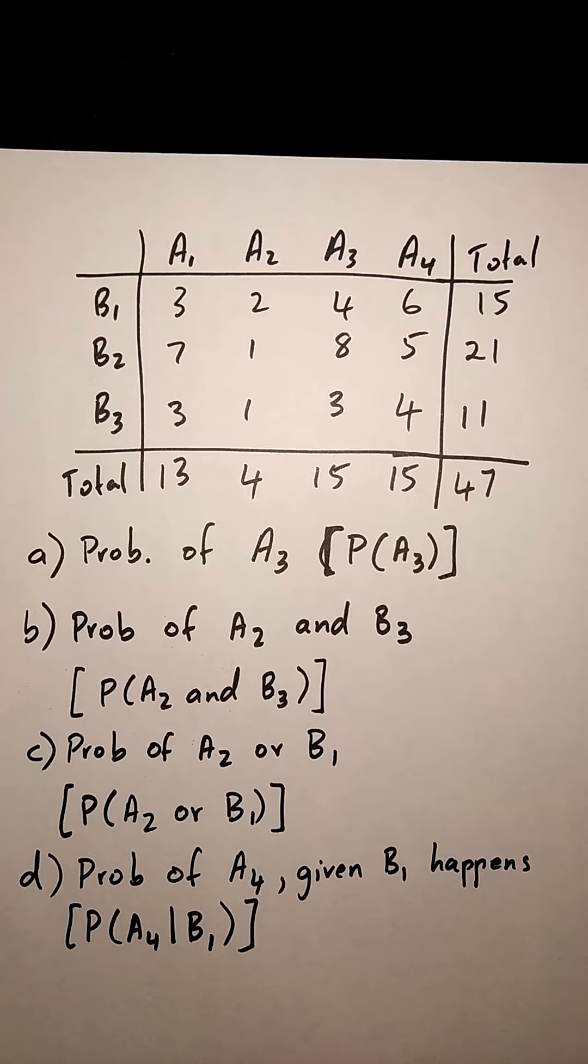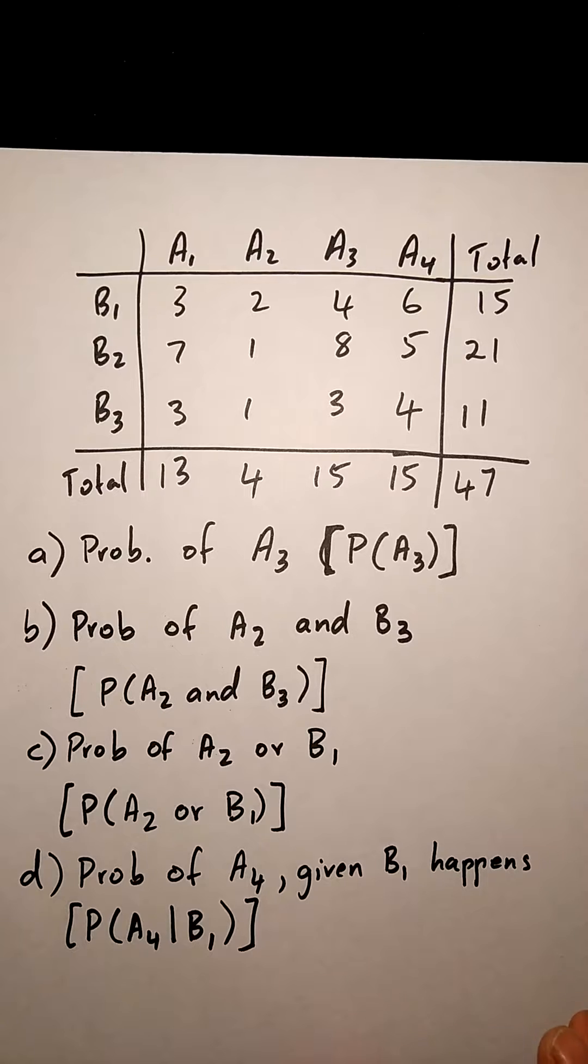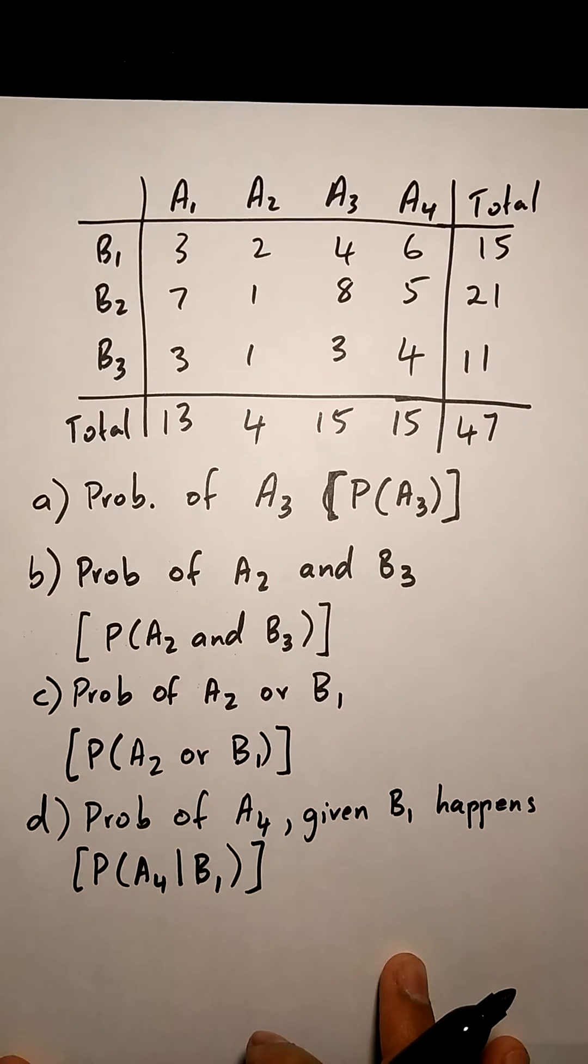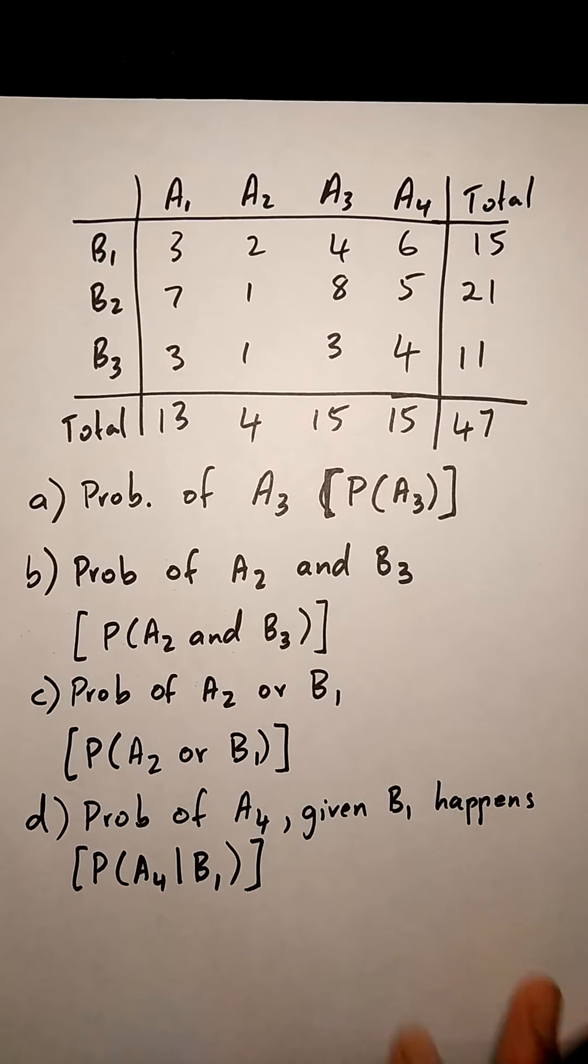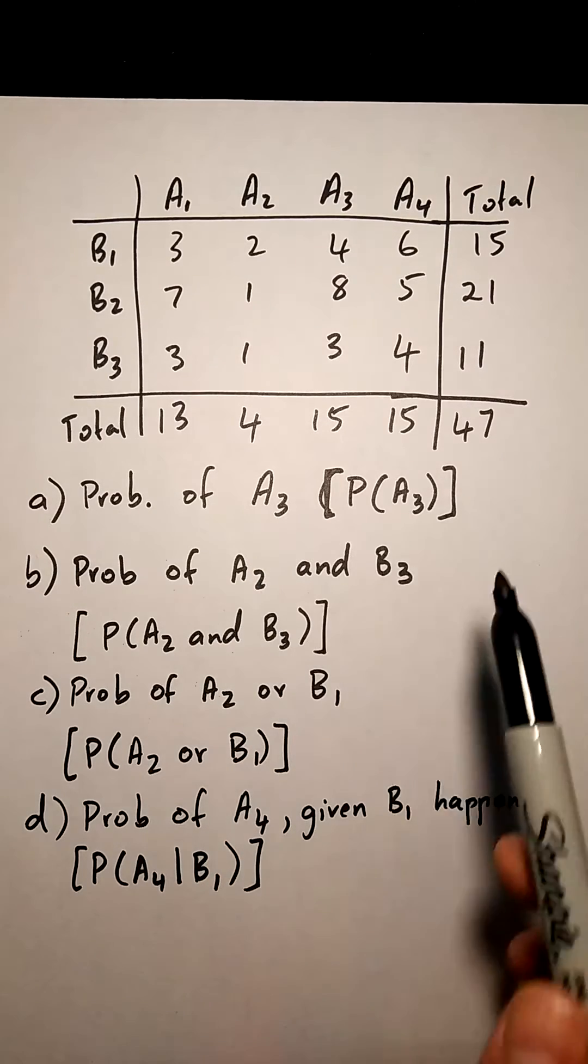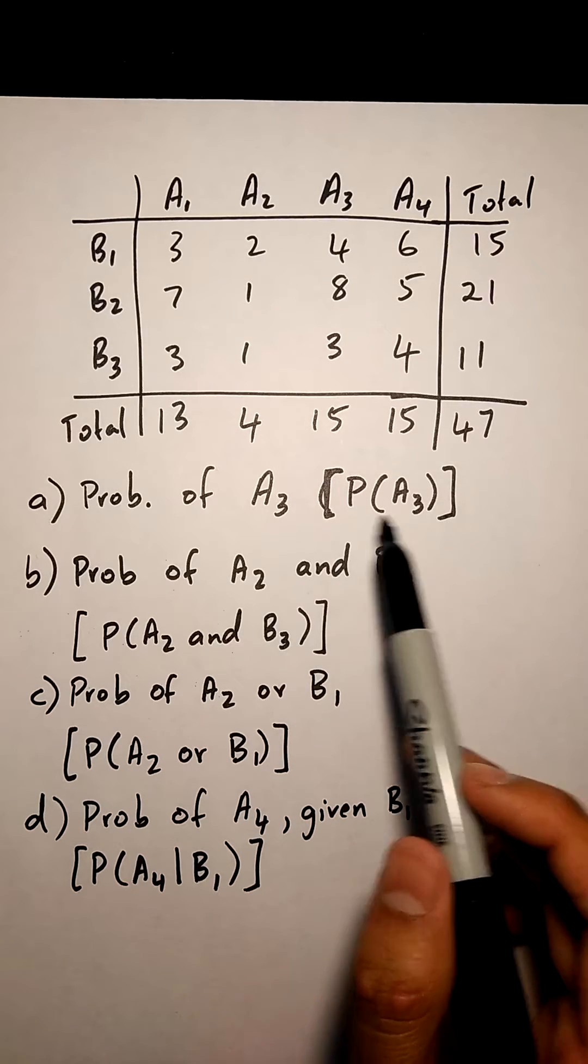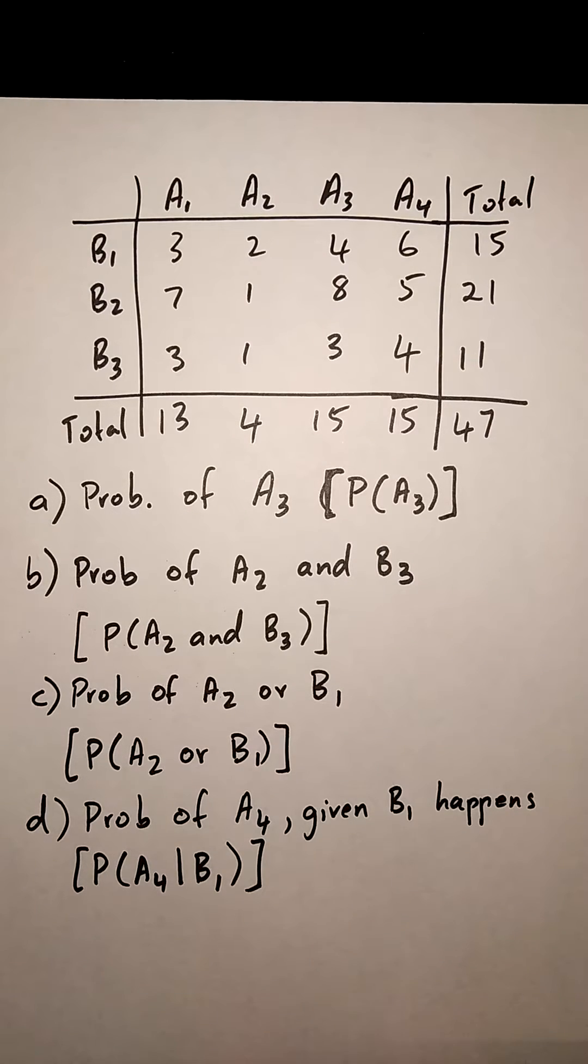Okay, so in this question we're given a contingency table and we can have four possible types of questions. The first question they can ask us is what is the probability of just one letter or one option. In this case, we're trying to find the probability of A3. They could also give it to you like this, P(A3), which means the same thing.